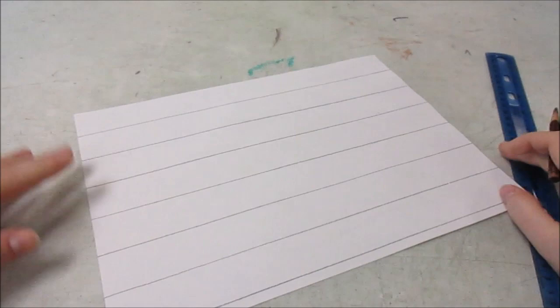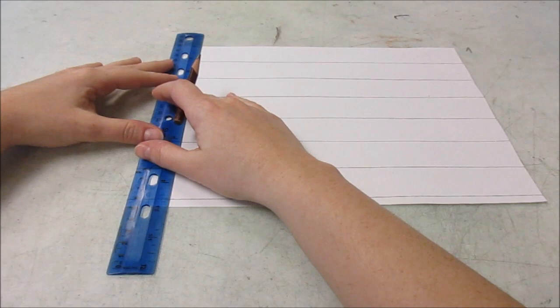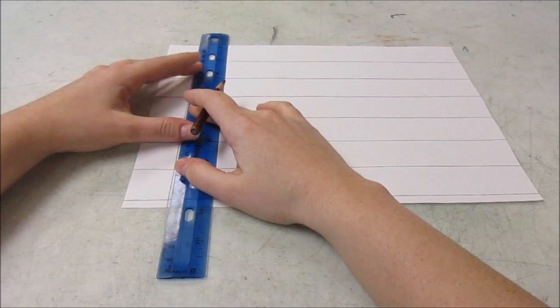Okay, so now we're turning it back to the horizontal and we're going to start the same way. So we're going to line it up with the edge and we'll just make a line that goes down. We'll do that a few more times.